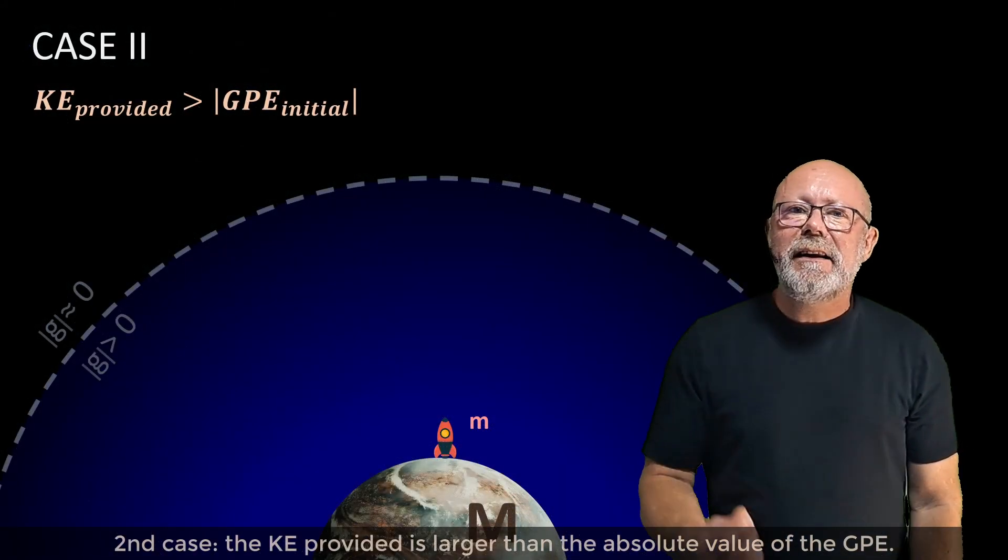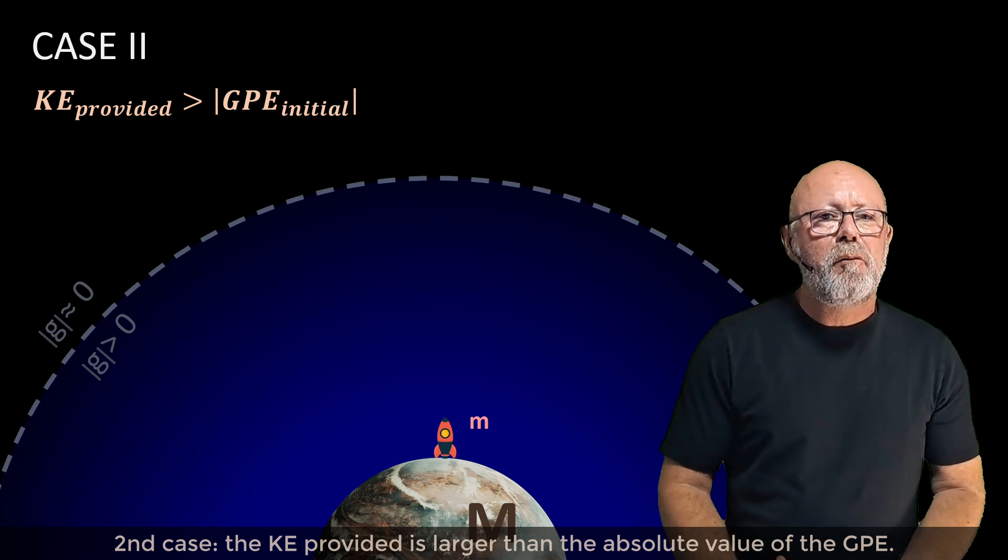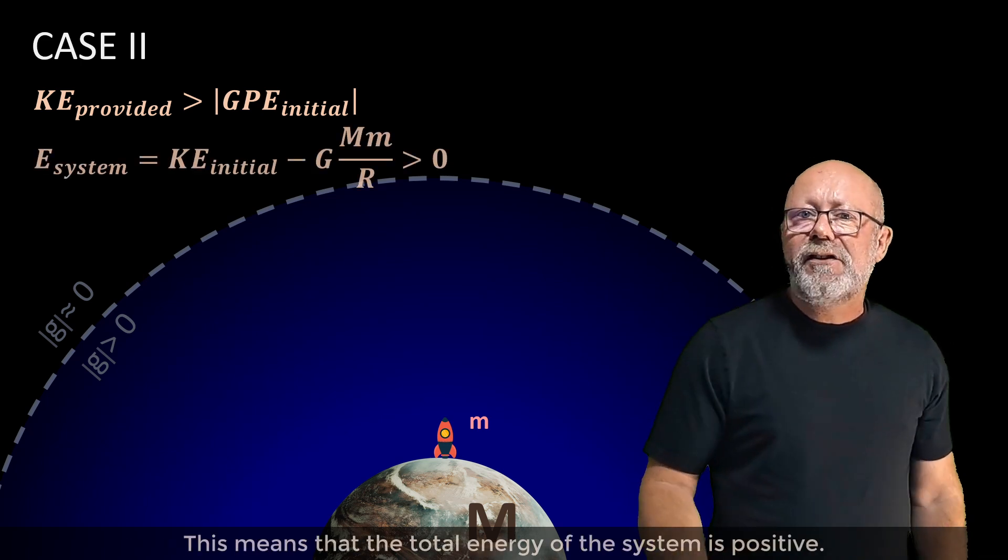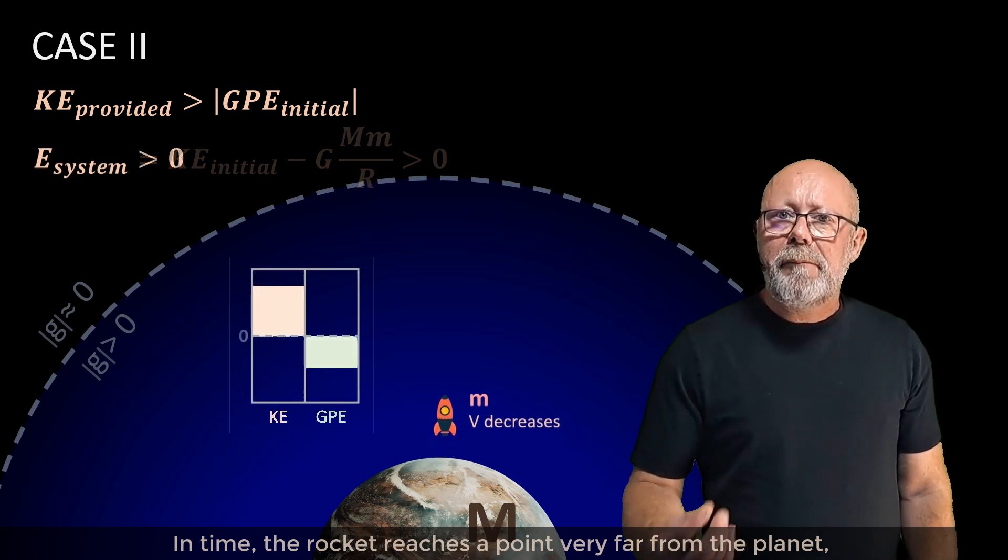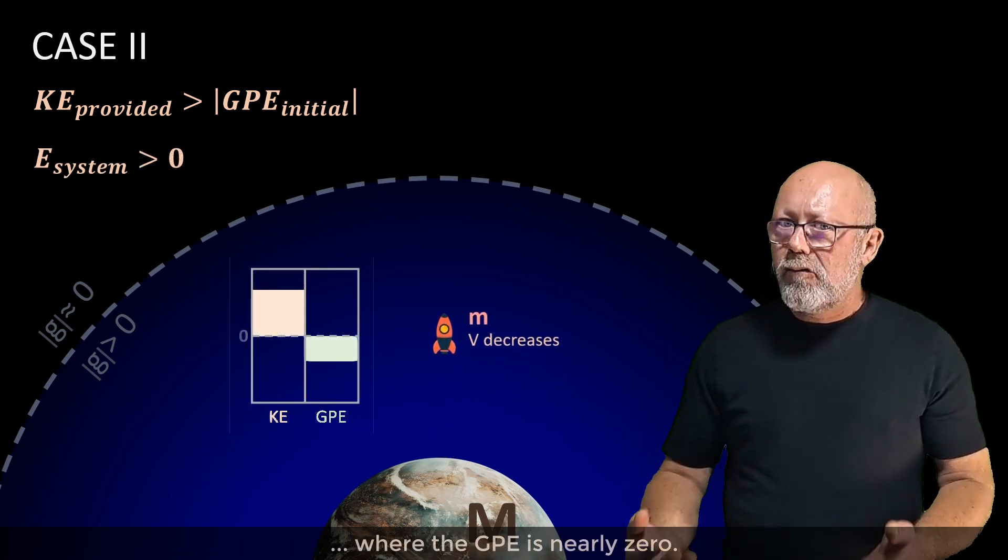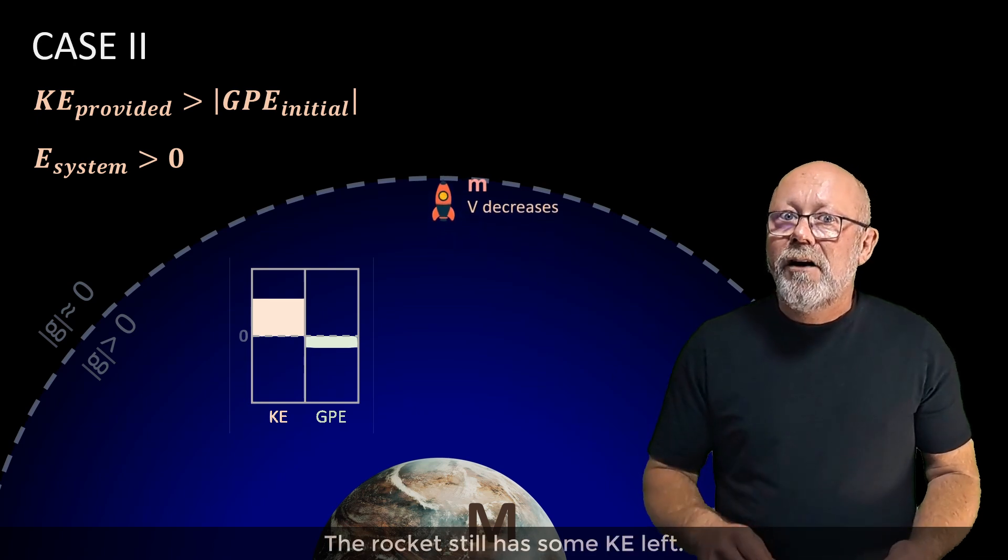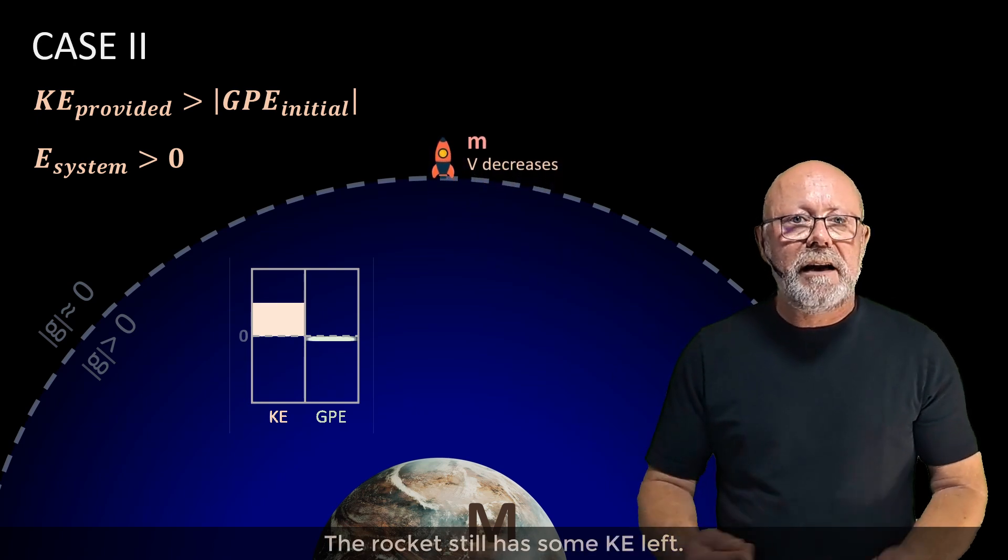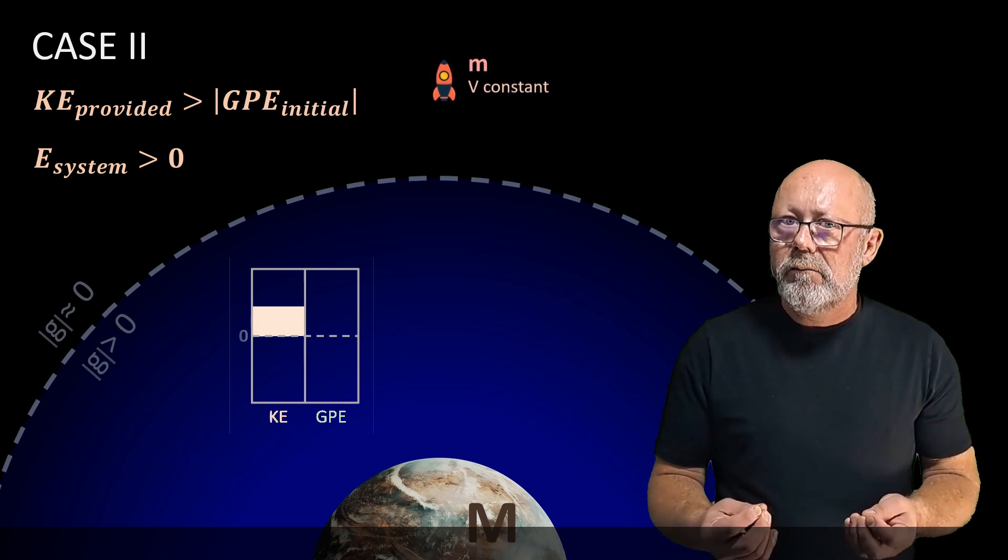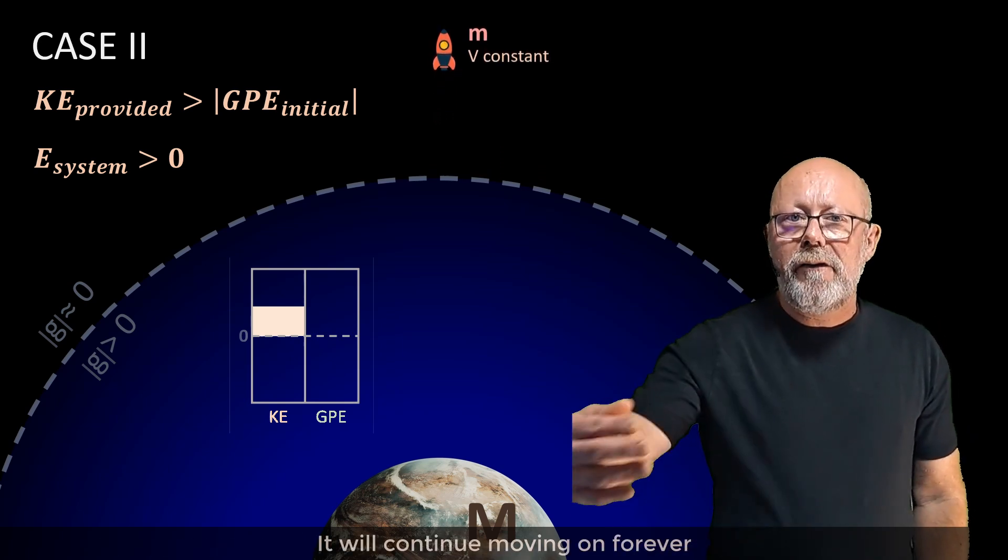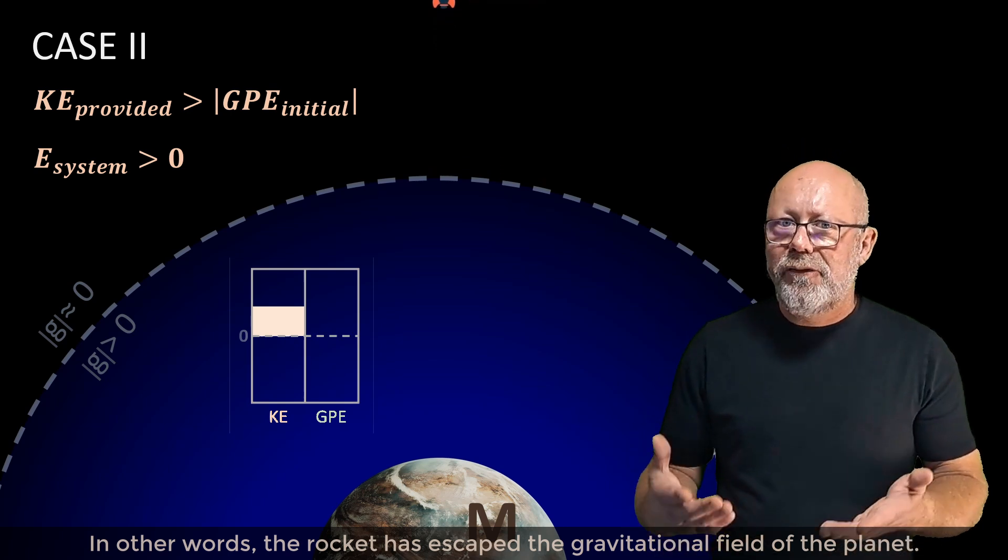Second case: the kinetic energy provided is larger than the absolute value of the gravitational potential energy. This means that the total energy of the system is positive. In time, the rocket reaches a point very far from the planet, where the gravitational potential energy is nearly zero. At that point, the rocket still has some kinetic energy left. That means that the rocket will never reach a point where the kinetic energy is zero. It will continue moving on forever. In other words, the rocket has escaped the gravitational field of the planet.